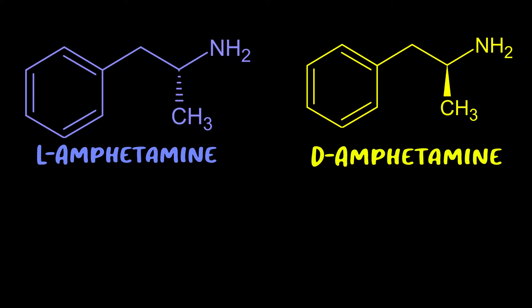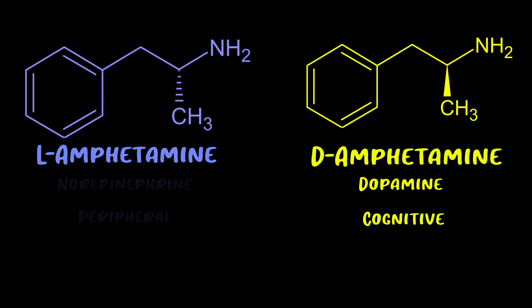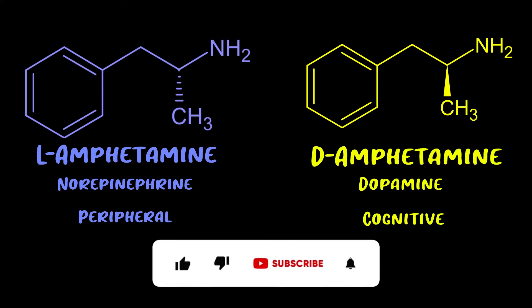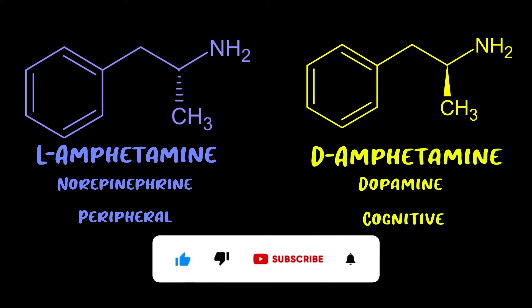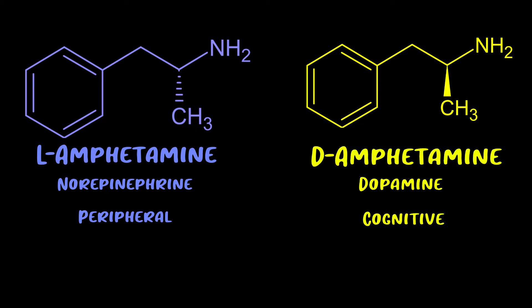This is a bit oversimplified, but it's easy to remember: the d-isomer binds more readily to dopamine receptors, causing more of the euphoria and mental stimulation, whereas the l-isomer binds more readily to norepinephrine receptors, causing more of that jittery fight-or-flight stimulation. L-amphetamine also has more peripheral effects, particularly on the cardiovascular system, while d-amphetamine has more central effects.